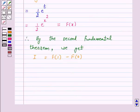So, this is equal to (1/2) e^(1²) minus (1/2) e^(0²).